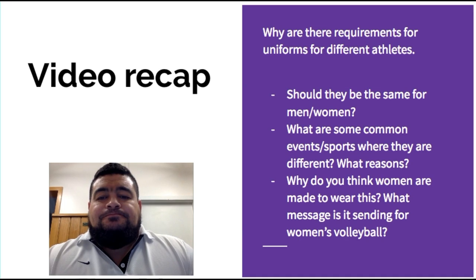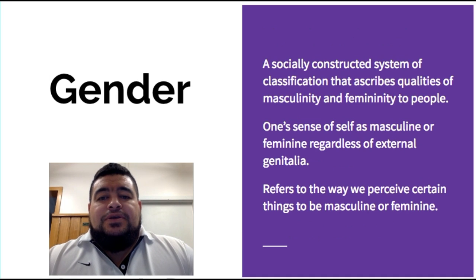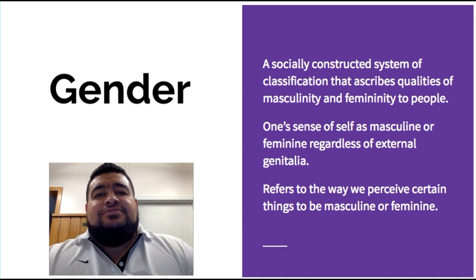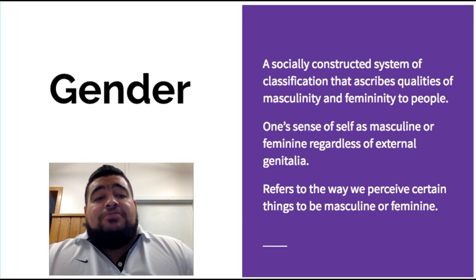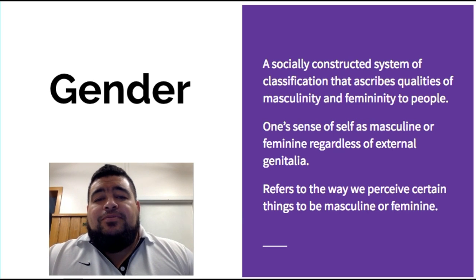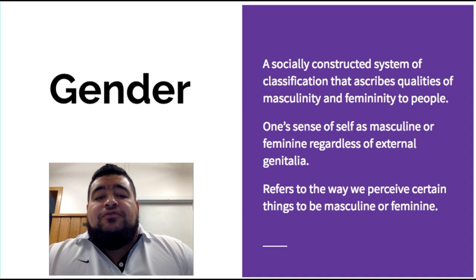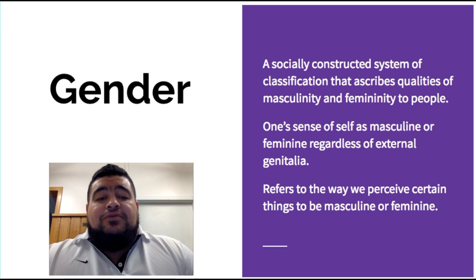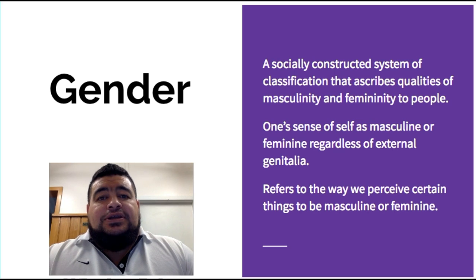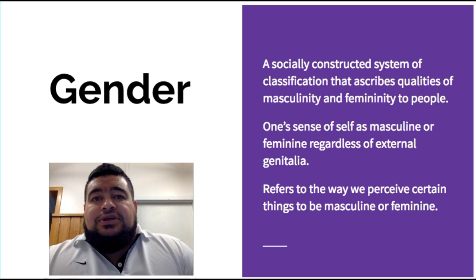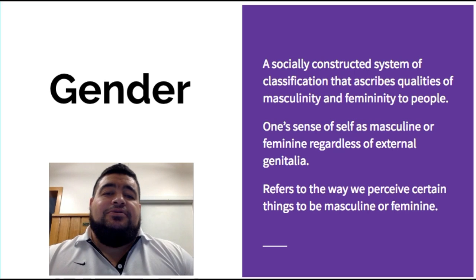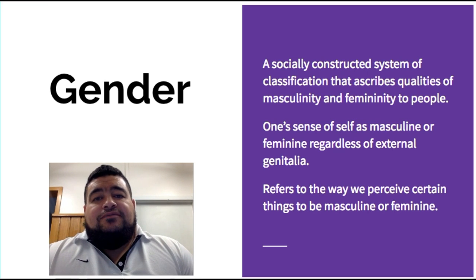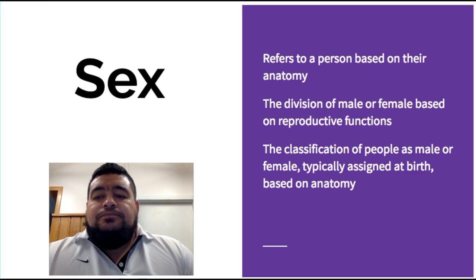Gender is a socially constructed system of classification that ascribes qualities of masculinity and femininity to people. It is one's sense of self — masculine or feminine — regardless of external genitalia, and refers to the way we perceive certain things to be either masculine or feminine. For example, blue is seen as a masculine color whereas pink is seen as a feminine color.